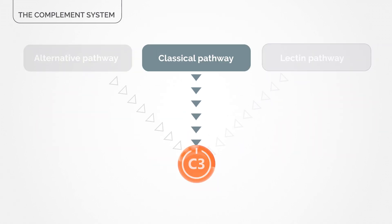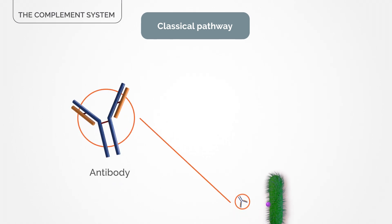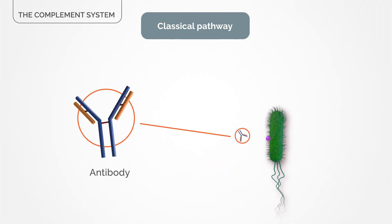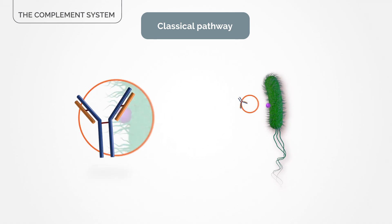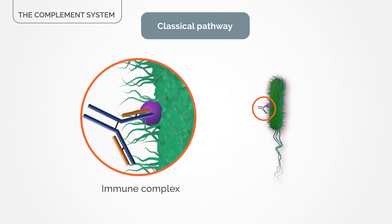The classical pathway is activated when an antibody, a protein produced by our immune system, recognizes and binds to a component on the surface of a foreign cell, forming an immune complex, starting an immune response that targets the pathogen for destruction.